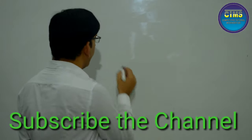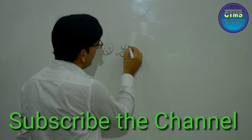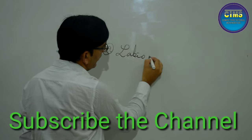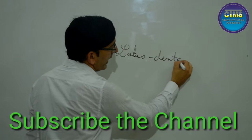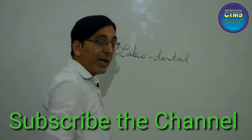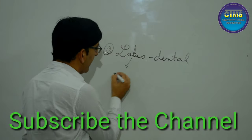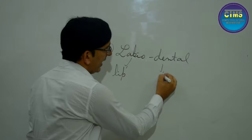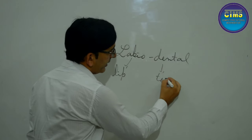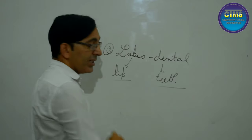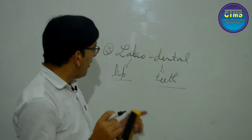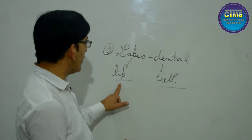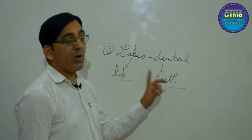The second category is called labiodental. Labio refers to lip and dental refers to teeth. So labiodental means a consonant sound where the lip and teeth are used together. The active articulator is the lower lip and the passive articulators are the upper teeth — both are passive.